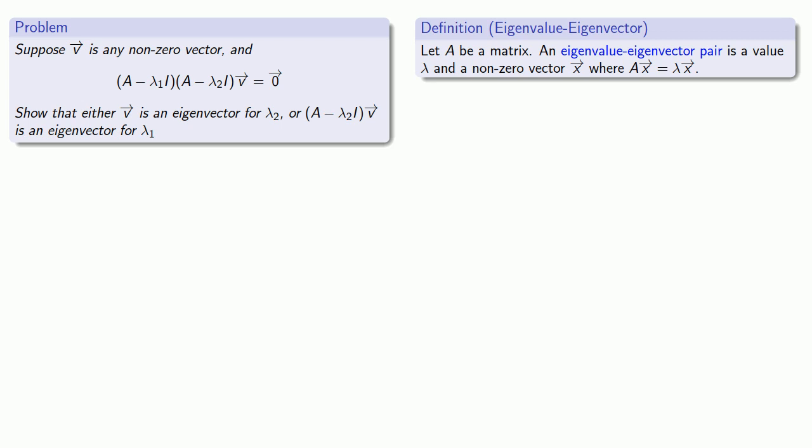Either (A - λ2I)v is the zero vector, or it isn't. So suppose (A - λ2I)v is the zero vector.